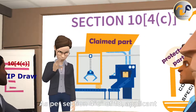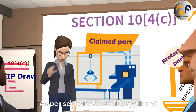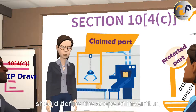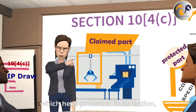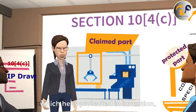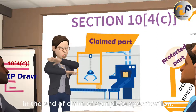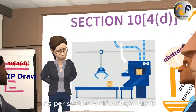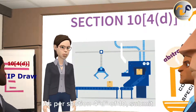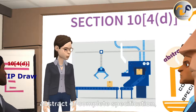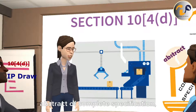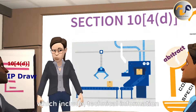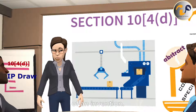As per Section 10(4), the applicant should define the scope of the invention which is protected in the claim at the end of the complete specification. The applicant should also submit an abstract of the complete specification which includes technical information of the invention.